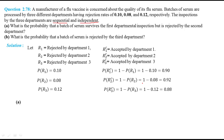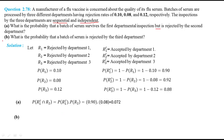For part A, the serum surviving the first department means it is accepted by department 1, represented by R1 complement. 'But' is represented with intersection, and rejected by the second department is represented by R2. So we write probability of R1 complement intersection R2. Since both events are independent, by the law of multiplication for independent events, probability of R1 complement intersection R2 equals probability of R1 complement multiplied by probability of R2. Using the probabilities, we have 0.072.